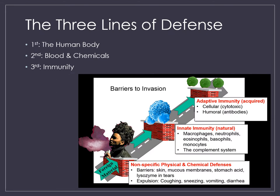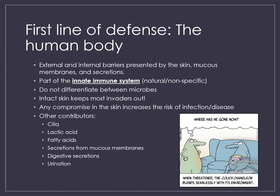We already know our skin is the first line of defense — that's the human body. Our second line of defense is blood and chemicals, and our third line of defense is immunity. We're going to talk about all of those separately. Our first line of defense consists of things we're born with, referred to as the innate immune system — innate meaning we were born with it, also considered a natural or non-specific defense.